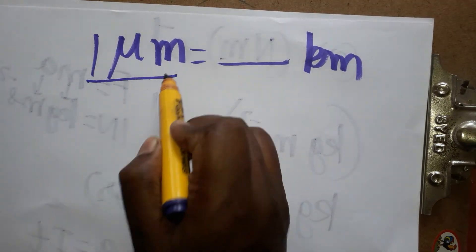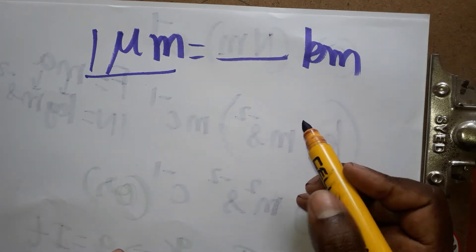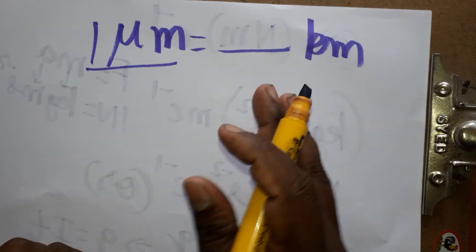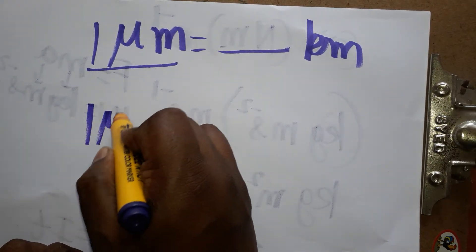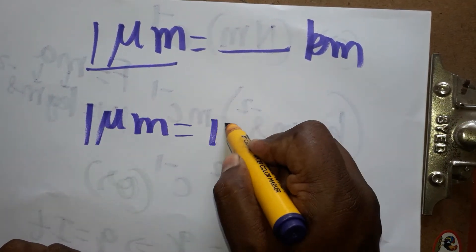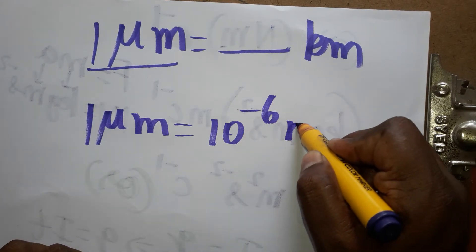Today we are going to learn how to convert from micrometer to kilometer. Before converting, you should know about the comparison. One micrometer is equal to 10 power minus 6 meter.